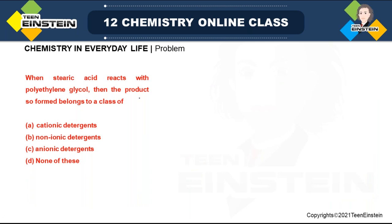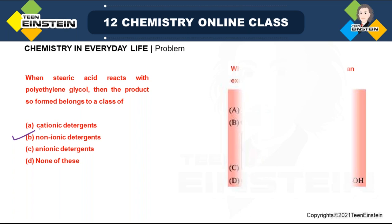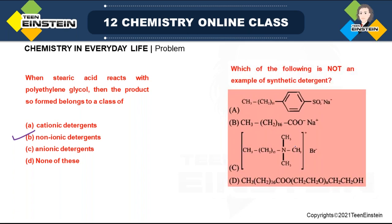Question: When stearic acid reacts with polyethylene glycol, the product belongs to the class of non-ionic detergents. Which of the following is not an example of a synthetic detergent? The option with a carboxylic acid salt (CO₂⁻) structure is actually soap, not a synthetic detergent — so that is not a synthetic detergent. The correct answer is option B. That concludes the session — thank you for listening.